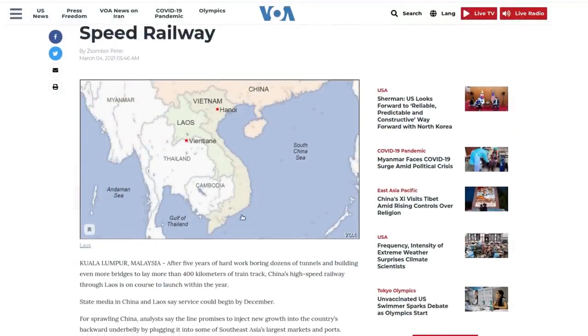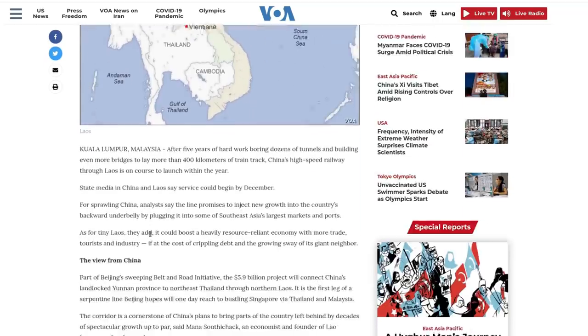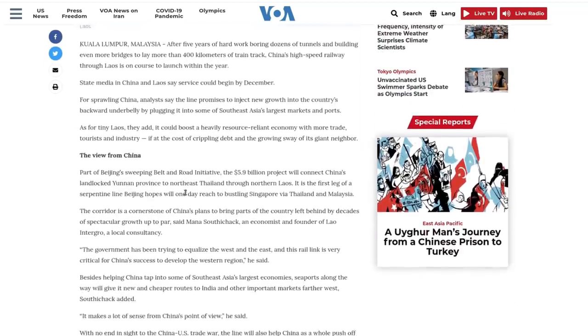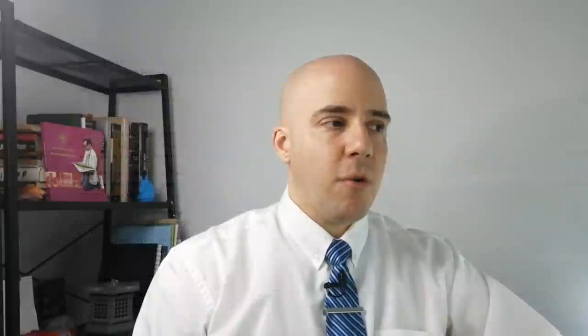And we see the same nonsense being rolled out by the U.S. State Department through Voice of America, which is U.S. State Department media. Laos braces for promise peril of China's high-speed railway. This was March 2021. And they're repeating the same nonsense that we saw the Business Insider saying over 10 years ago about how can Laos possibly afford this? Their economy is so poor.